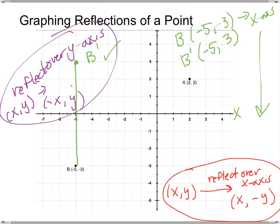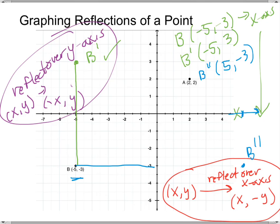Reflecting B over the y-axis: keep the y-coordinate (−3) the same and take the opposite of the x-coordinate — the opposite of −5 is 5 — giving B double prime at (5, −3). Since B is 5 units to the left of the y-axis, B double prime is 5 units to the right of it.